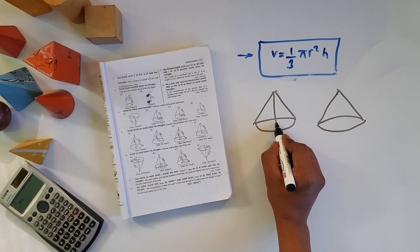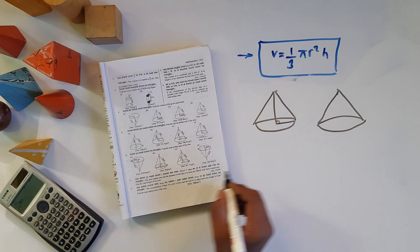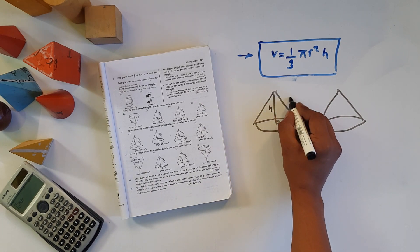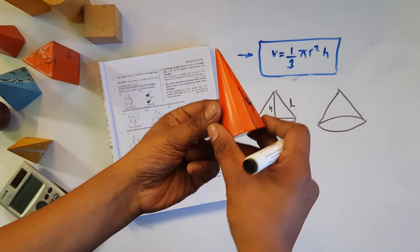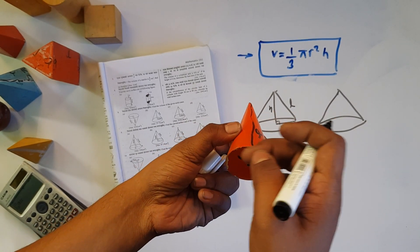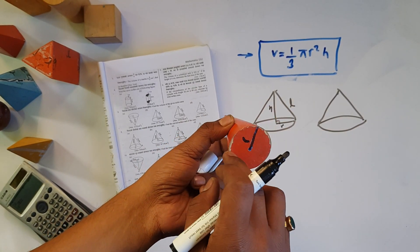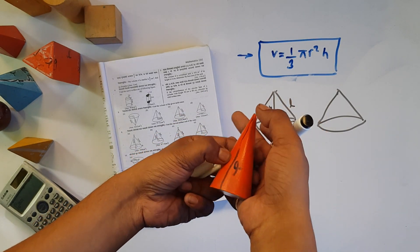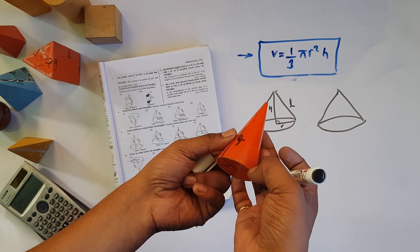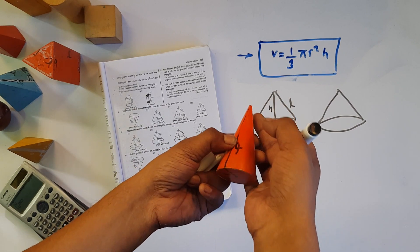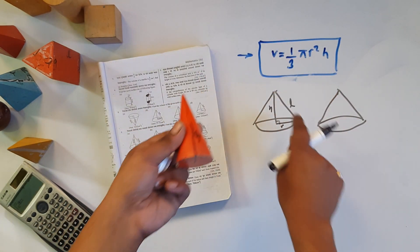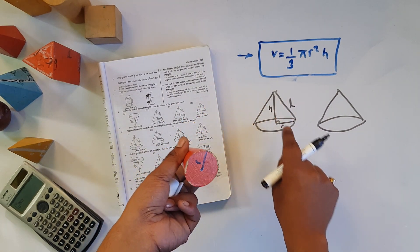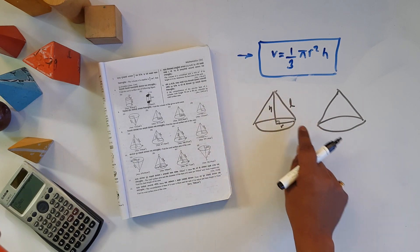Let me remind you of the parts: this is the perpendicular height, this is the radius, and this is the slant height. The slant height is L, the radius is R, and the height is H. This forms a right angle triangle.